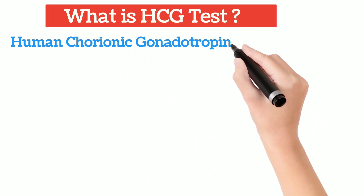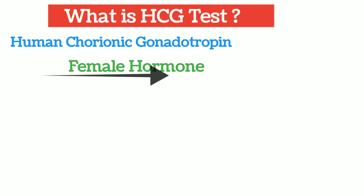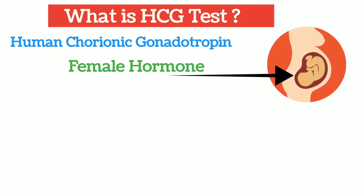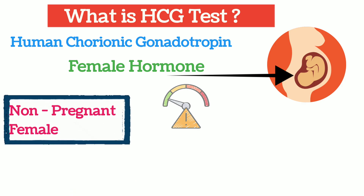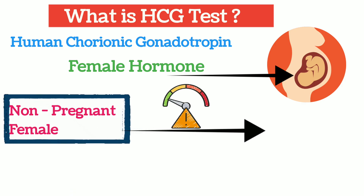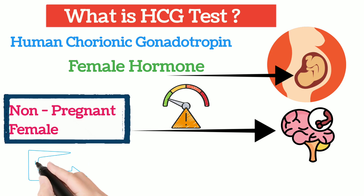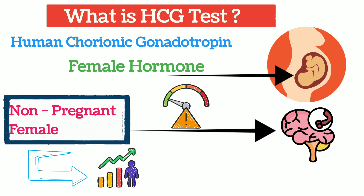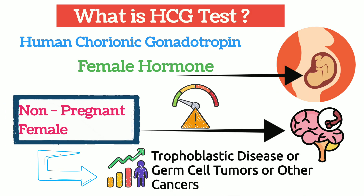ECG stands for human chorionic gonadotropin. It's a female hormone that is released by the placenta of a pregnant female. Non-pregnant females have ECG in very minute quantity, which is mostly secreted by the pituitary gland. But we remember, if a non-pregnant female releases ECG in a very high amount, then it might suggest different types of disease like trophoblastic disease, germ cell tumors, and other cancers.